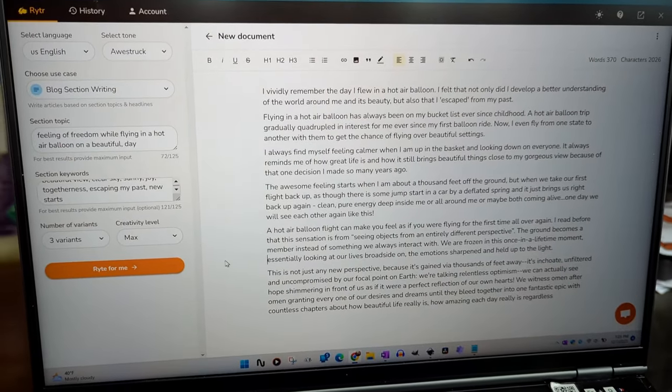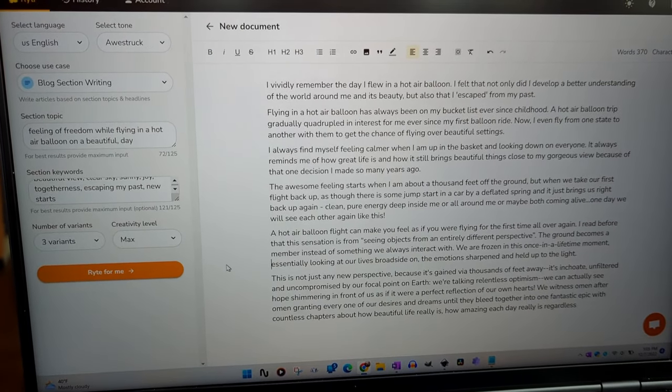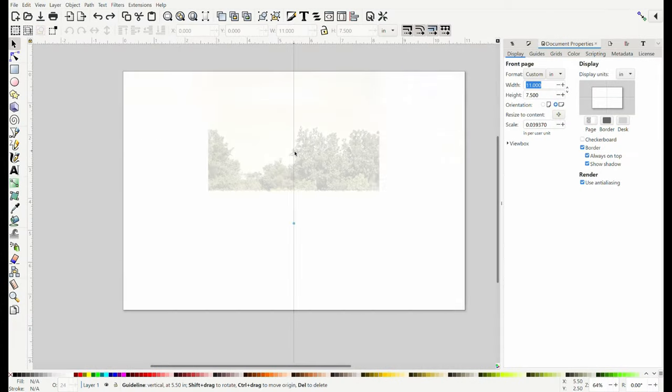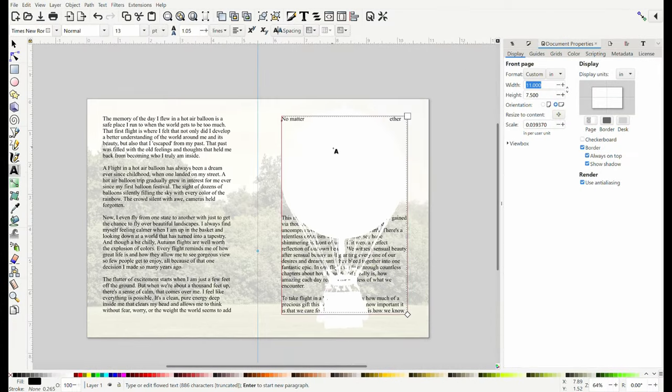But while I let that dry fully, I'm going to move on to the story pages. I'm playing with the ChatGPT AI to add a bit of fantasy to the story. For the page layout, I'm using Inkscape. It's free. It might be a little bit basic, but it's everything I need for this.